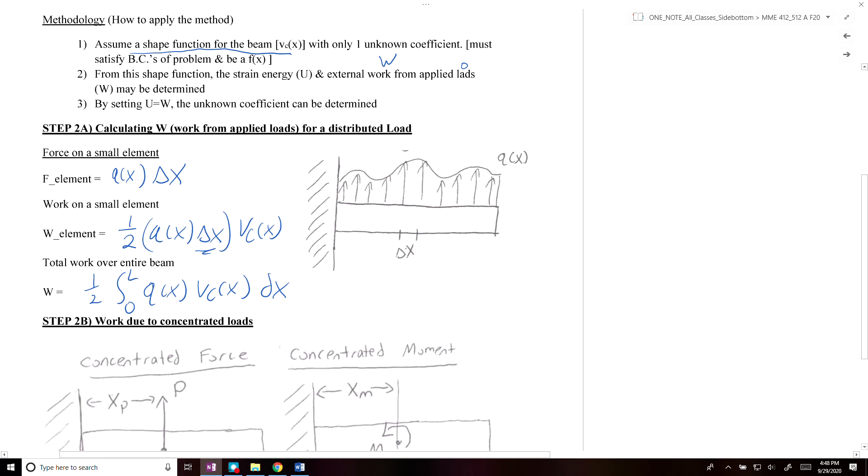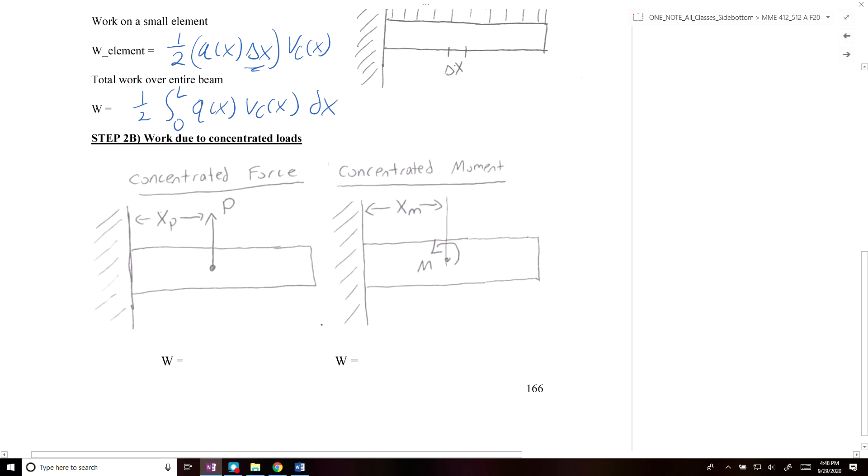In the case of concentrated forces or moments, we can calculate the work done by multiplying the concentrated force P by 1/2 and by the displacement at that point, Vc at x equals xp.